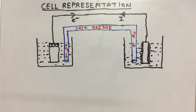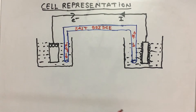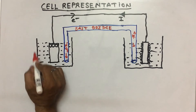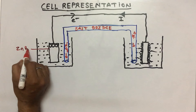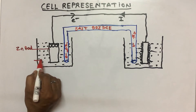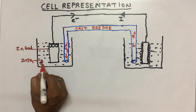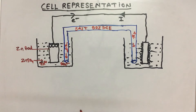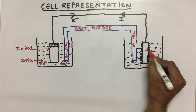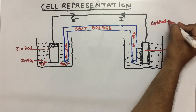Hello students, cell representation. I have drawn a cell diagram in which I have made a lamp beaker and it has a zinc rod dipped in its own electrolyte ZnSO4, which means the solution has Zn2+ ions and SO4 2- ions. Here I have a platinum cathode on the left-hand side.